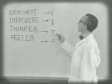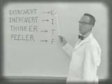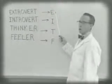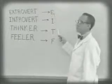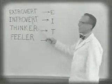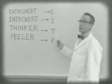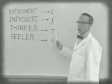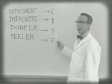The extrovert, or E, processes information while talking. The introvert, or I, processes information internally.